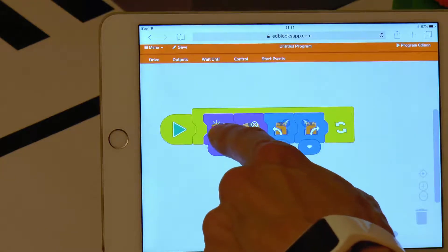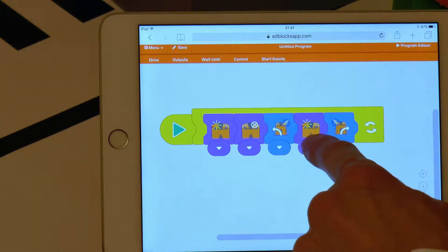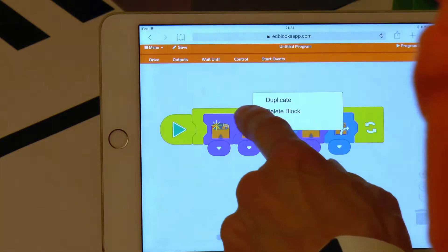Before turning left, I'll place a block to activate the left LED and switch off the right LED. And before turning right, I'll place the same blocks, but invert them. Left LED out, right LED in.